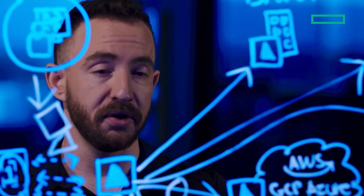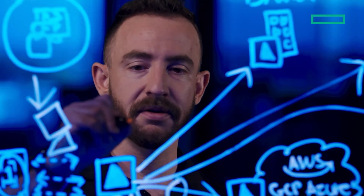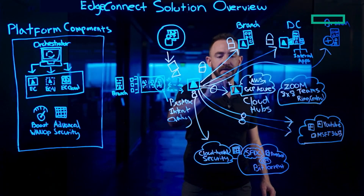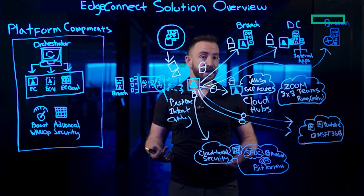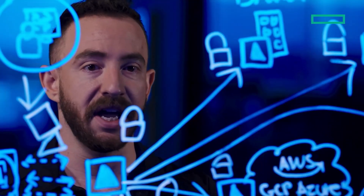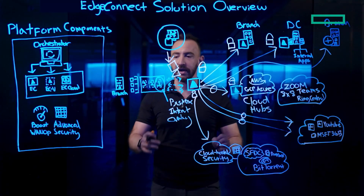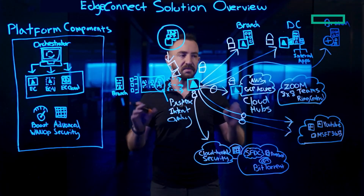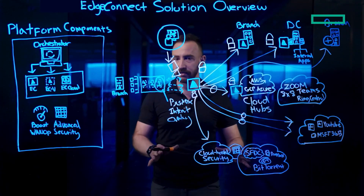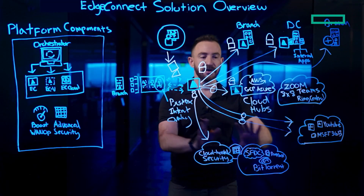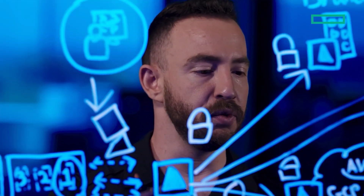The EdgeConnect solution also includes a suite of unified threat management features, including an end-to-end fully orchestrated zone-based firewall, VRF segmentation, intrusion detection and prevention, and automated application and threat signature updates. The EdgeConnect solution contains all of the components necessary to meet the challenges of the modern WAN Edge: SD-WAN, security, routing, granular application identification, secure internet breakout, easy one-click service chaining to cloud hubs or to best-of-breed cloud-hosted security providers, built-in WAN acceleration, and advanced unified threat management security features.